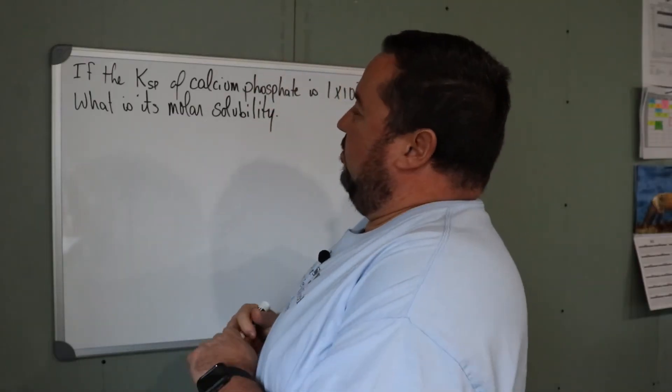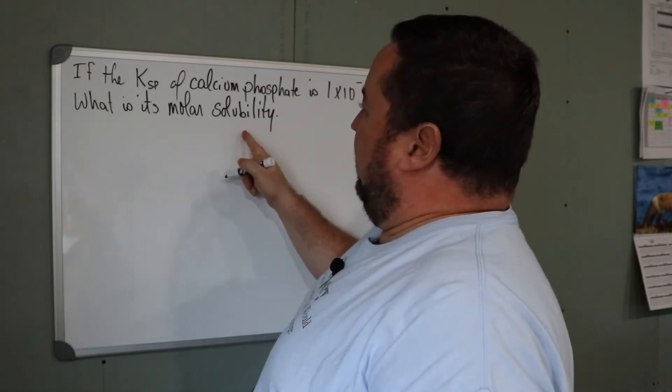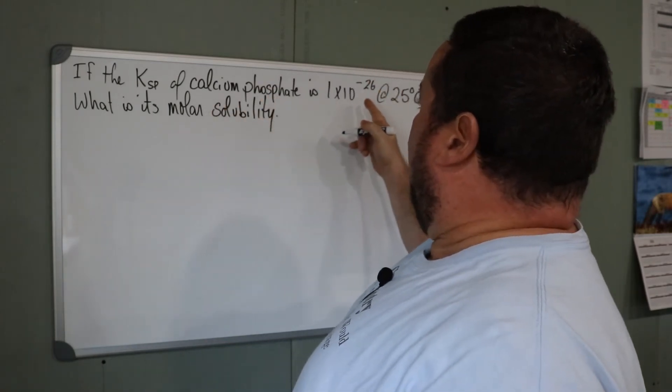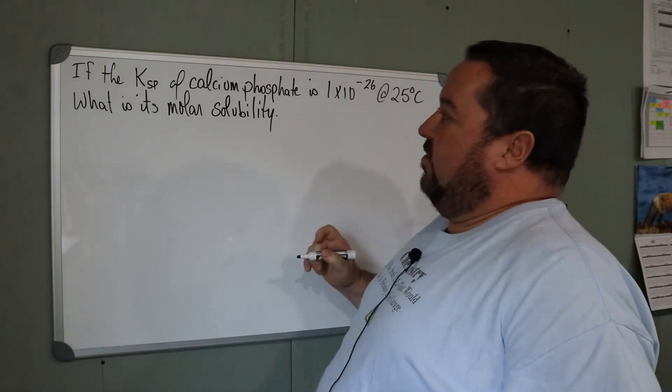In our final example, we're going to calculate the molar solubility of calcium phosphate from its Ksp value at 25 degrees.